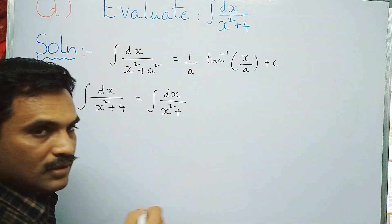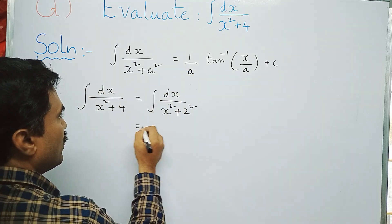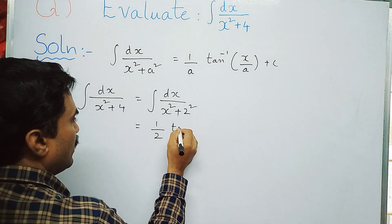So as I told you before, 4 can be written as 2 squared, so 2 squared. This is what just happened. Now apply the formula. So here a is what? This a is 2. So this will be 1 by 2 tan inverse...